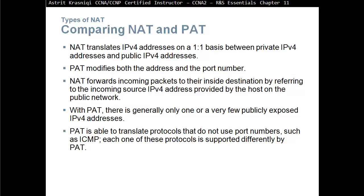Comparing NAT with PAT: NAT translates IPv4 addresses on a one-to-one basis between private and public IPv4 addresses, first-come first-served. PAT modifies both the source address and the source port number. NAT forwards incoming packets by referring to the incoming source IPv4 address from the public network. With PAT, there is generally only one or a few publicly exposed IPv4 addresses. PAT is also able to translate protocols that do not use port numbers, such as ICMP, though each such protocol is supported differently.